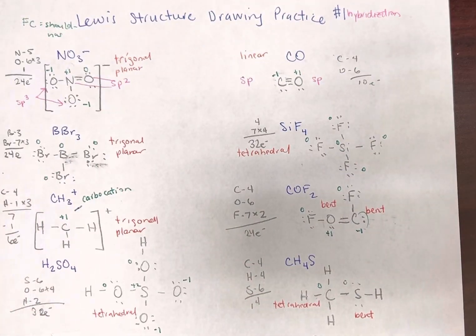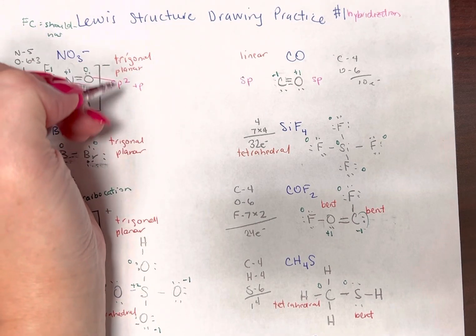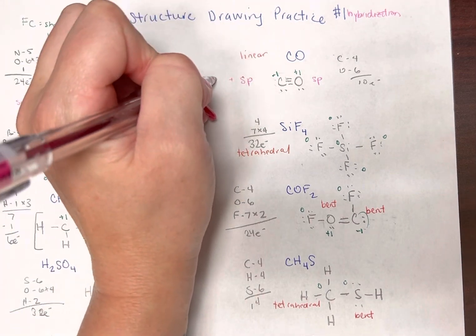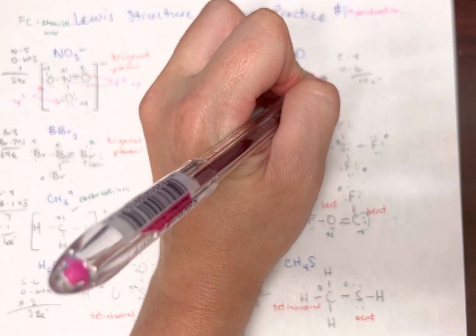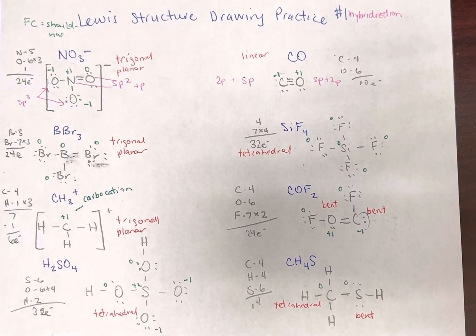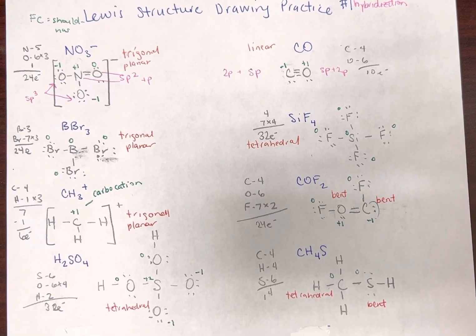So that means we have two, so here we can say plus an unhybridized p. So we can see here we have two unhybridized p orbitals if you want to do that. You don't have to write that if you don't want to.